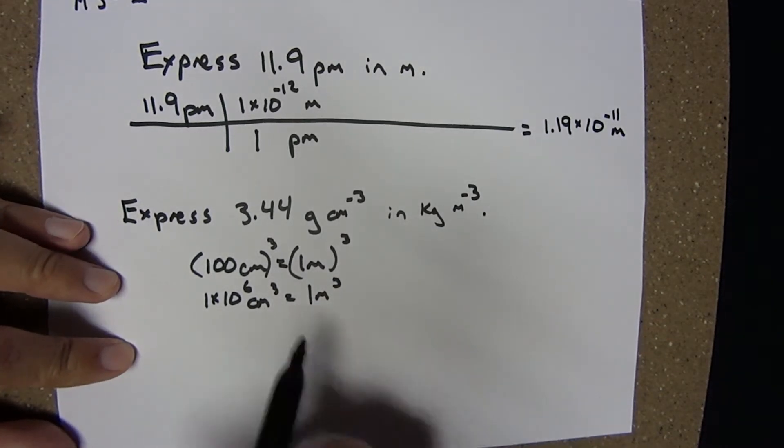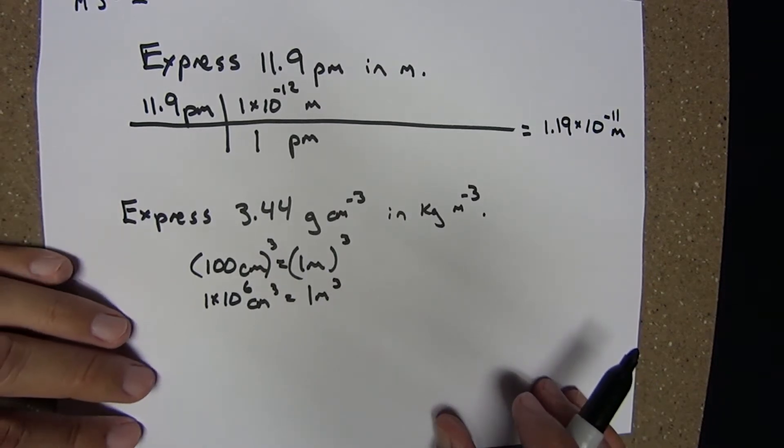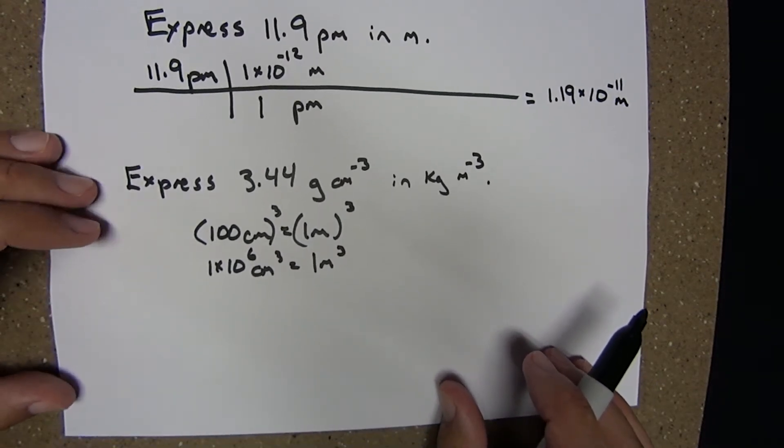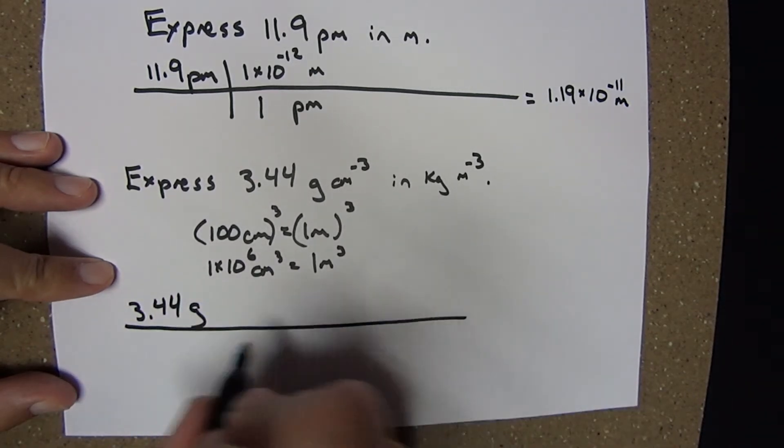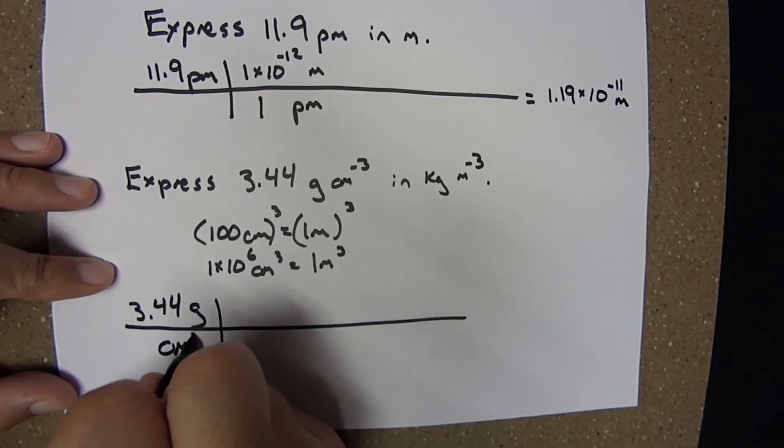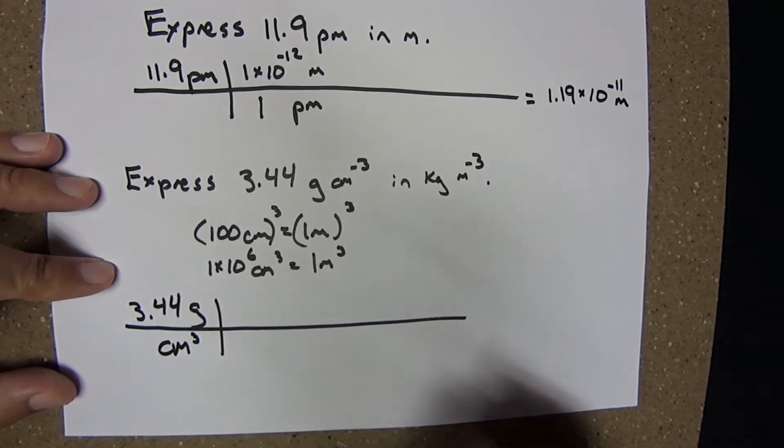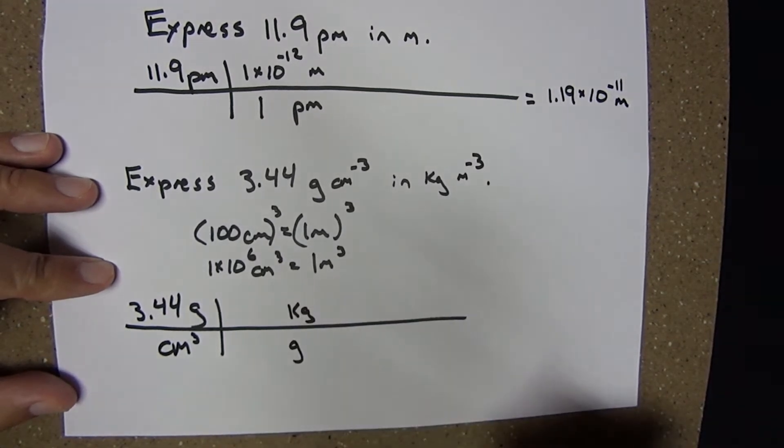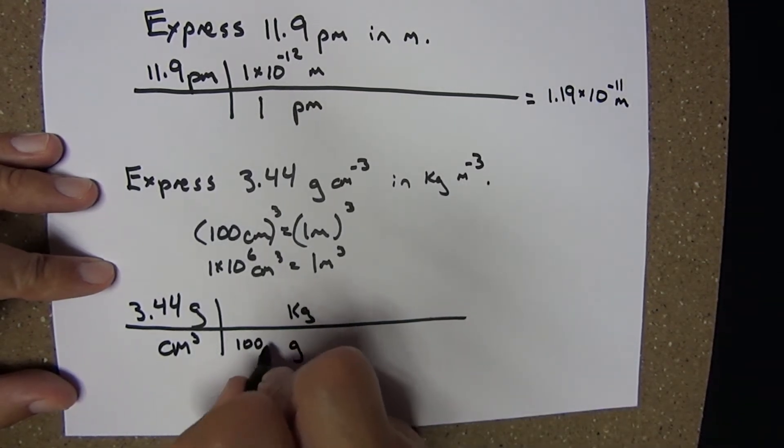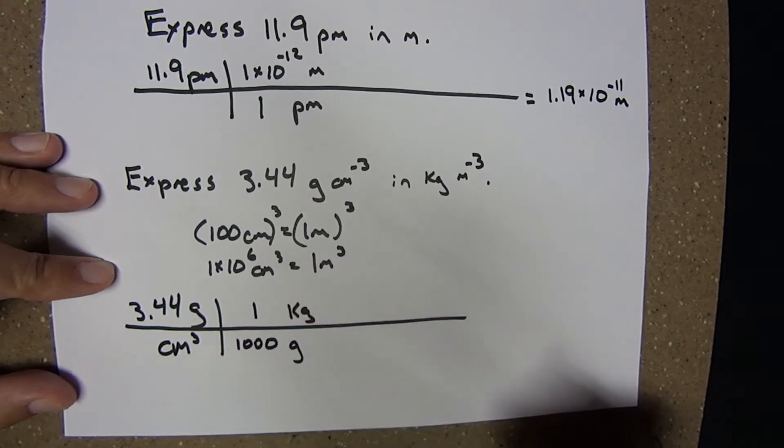Using the prefixes and this derived conversion, we have everything we need. Starting with 3.44 grams per cubic centimeter, let's handle the gram to kilogram conversion first. Grams will cancel, leaving kilograms: 1,000 grams equals 1 kilogram.